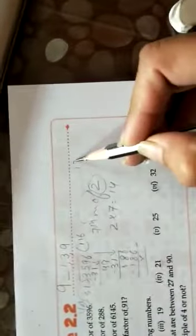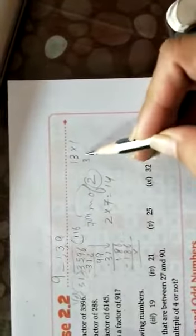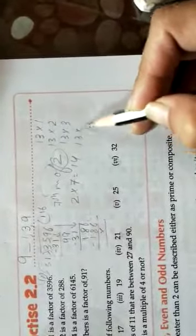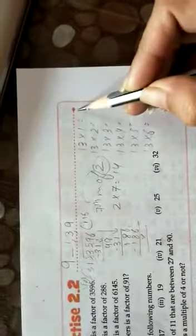Isne kaha hai find 6 multiples. Aapko in sab ke 6 multiples dhundne hai. Jaise 13 hai, 13 ke 6 multiples dhundne hai. Toh means aap 13 ki table 6 tak likhoge. Ya toh aap aise likh sakte ho, ya toh aap direct answer likh do.